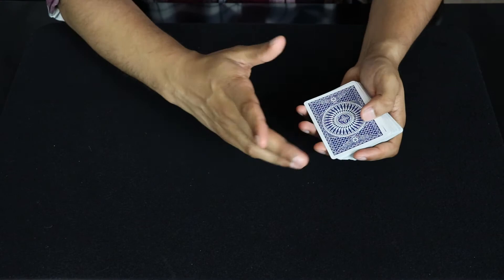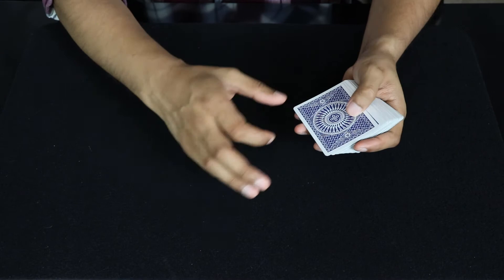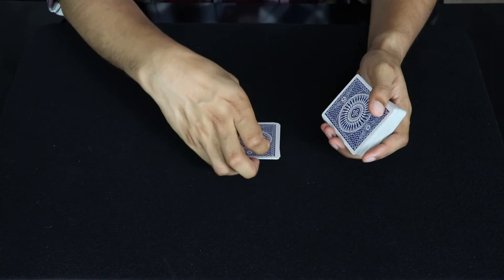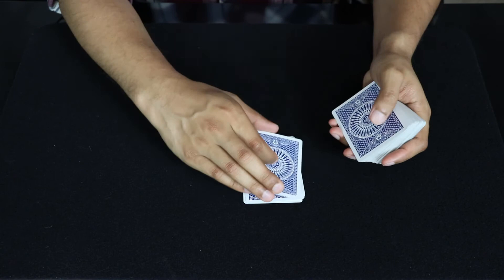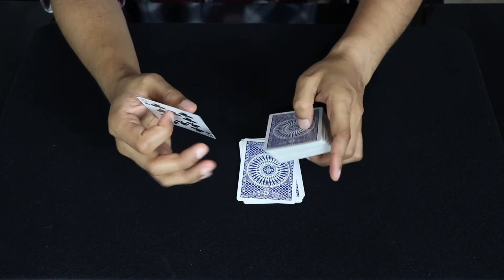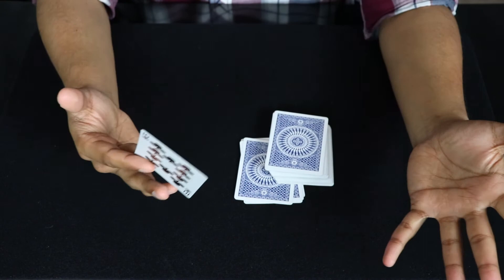And now you don't want to count differently, because remember in the beginning we counted like this. So you don't want to start counting like this, otherwise it's going to seem weird. So you want to be consistent throughout the whole trick. So all you're going to do, same way you're doing it before, you're going to count one, of course no breaks or no doubles, two, three, four, and five. You can just turn this over and show the Spectator, there's their card, the ten of clubs, and their mind is blown.